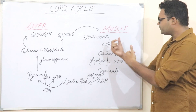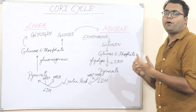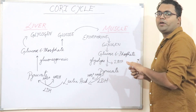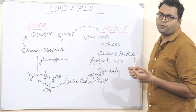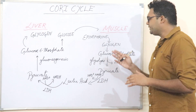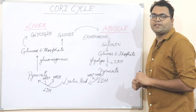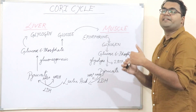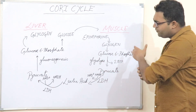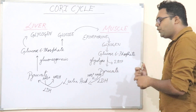PKA would activate glycogen phosphorylase, and the glycogen will be broken down into glucose-1-phosphate, then via phosphoglucomutase it will be converted to glucose-6-phosphate. Glucose-6-phosphate's fate will be determined by letting it complete the glycolytic cycle — you will get a net of 2 ATP via the glycolytic cycle, and you will have pyruvate.